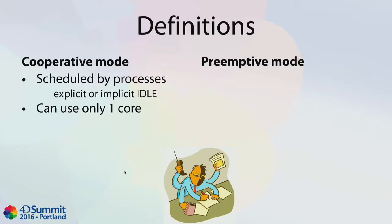Because one process stops by using the idle command or any other command to give the CPU to another 4D process, that means that only one CPU core can be used at the same time.